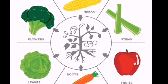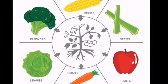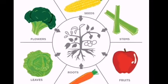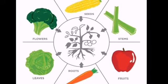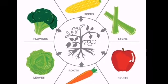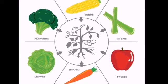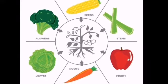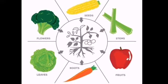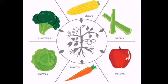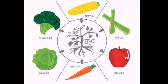Different parts of plants are root, stems, leaves, flower, fruits and seeds. Many plants are eaten as food. Now let us discuss them one by one.